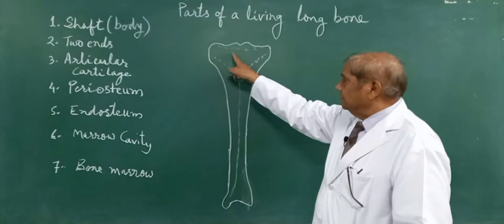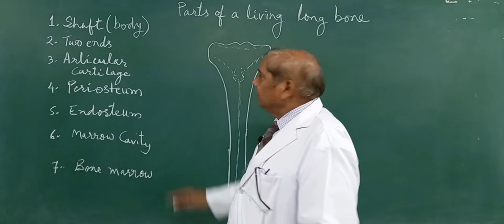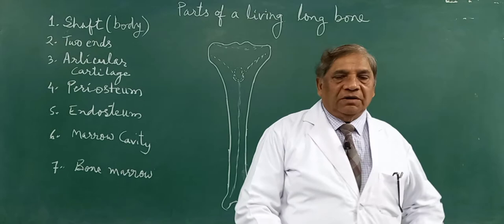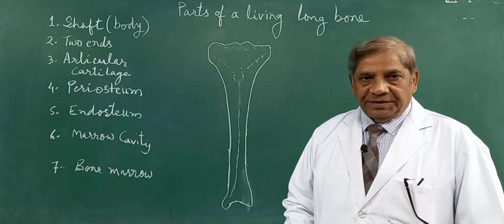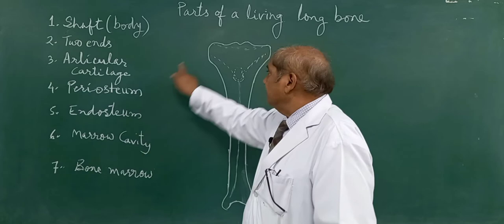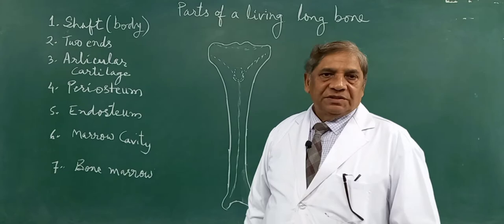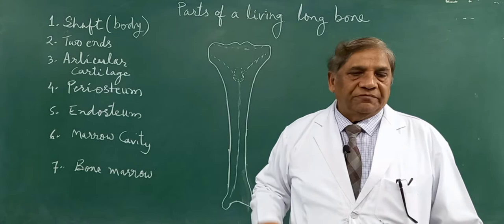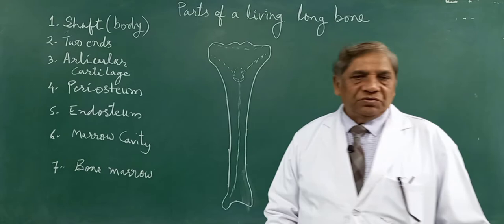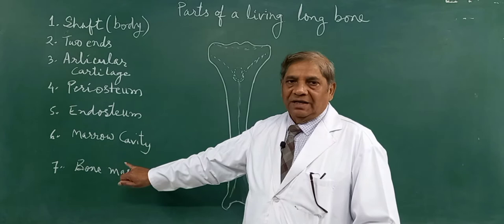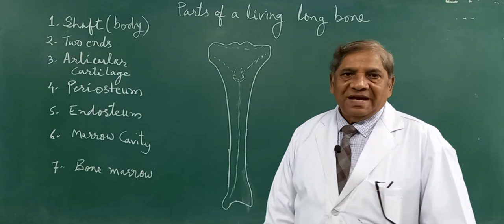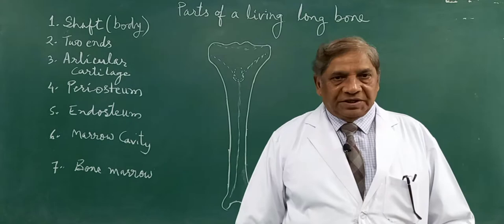Then there are the two ends — the upper end and the lower end. Then there will be the articular cartilage covering the ends of the long bone, which will come in contact with the other bone to form the synovial joint. Then the fourth part will be periosteum, that is a membrane covering the outer surface of the bone. After taking a section of the long bone — this tibia — we will discuss what is endosteum, which is just opposite to the periosteum. And in the same longitudinal section, we will learn about the marrow cavity, a cylindrical cavity which is present in the shaft or body of the long bone.